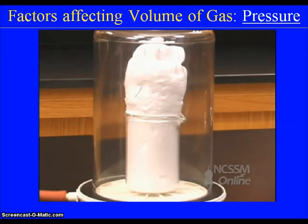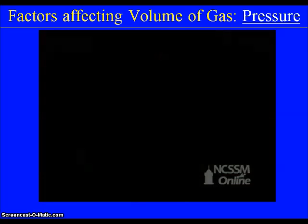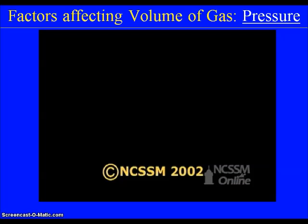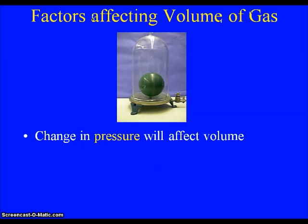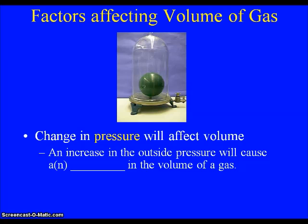When we open the valve and allow the pressure to come back in, it contracts. So we can definitely see there is a relationship between the pressure and the volume of a gas. An increase in the outside pressure will cause a blank in the volume of a gas. If you said decrease, you are correct. At first we lowered the outside pressure and the gas got bigger. Then we opened the valve to allow the air to come back in, increasing the pressure, and that caused the volume of the gas to decrease.